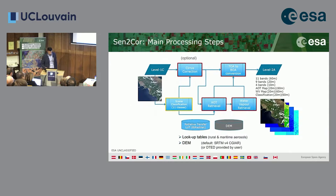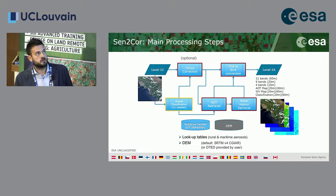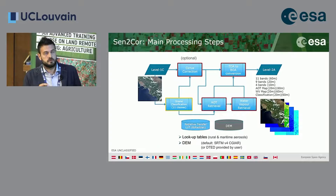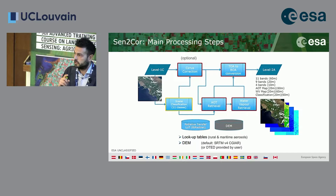Sen2Cor includes optional cirrus correction, and a top-of-atmosphere to bottom-of-atmosphere conversion using aerosol optical thickness retrieval and water vapor retrieval. The outputs are 11 bands at 60 meters, 9 bands at 20 meters, 4 bands at 10 meters, an aerosol optical thickness map, a water vapor map, and a classification layer at 20 and 60 meters.